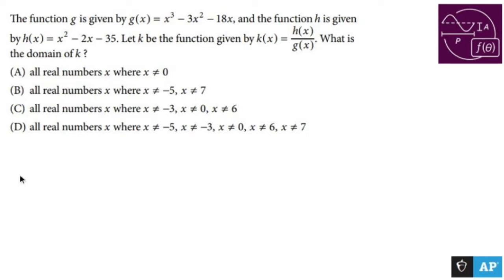I'm going to write out k(x) equals h, which is x² - 2x - 35, over g(x), which is x³ - 3x² - 18x.